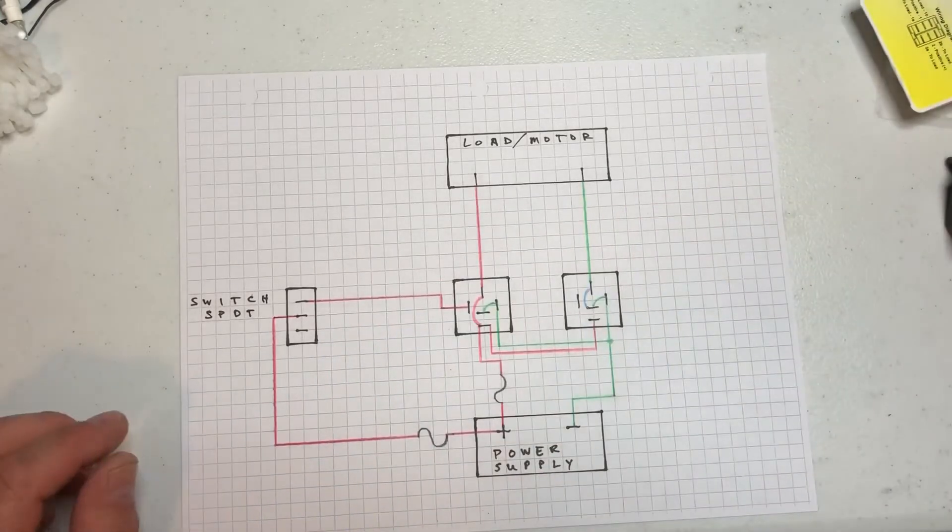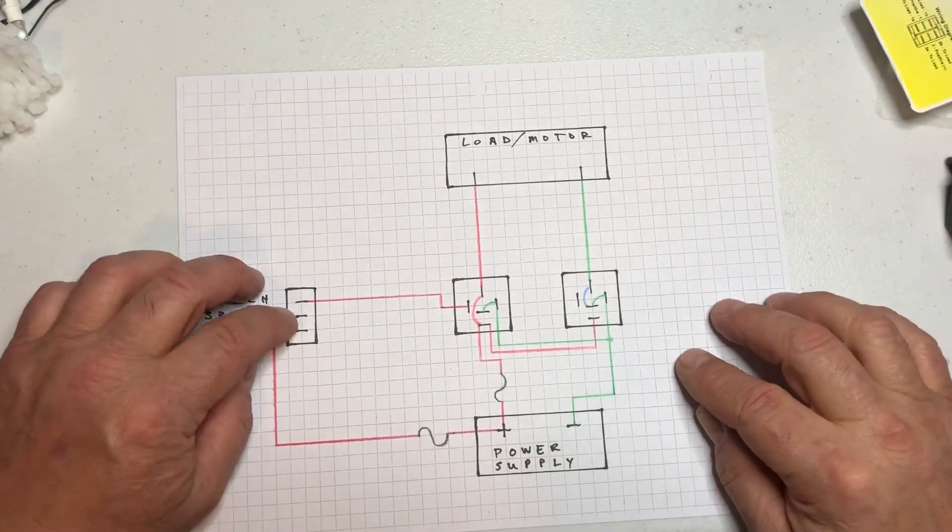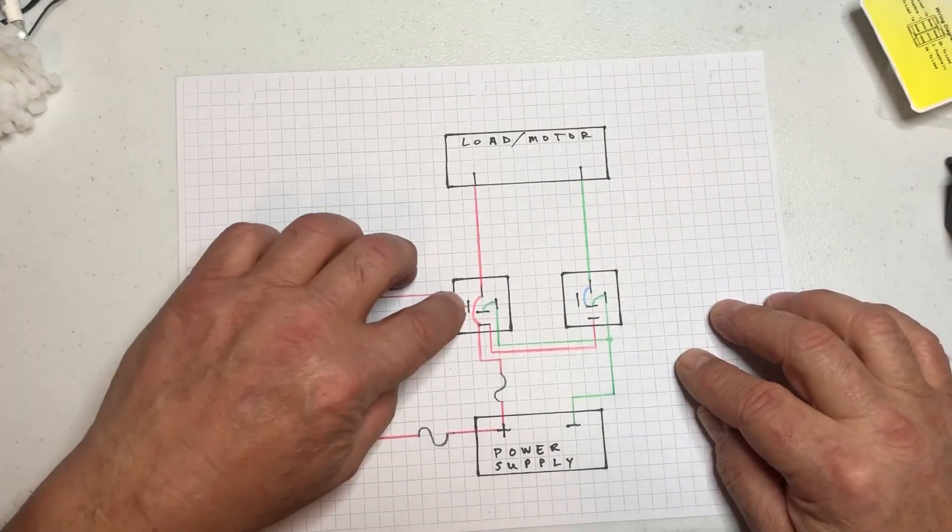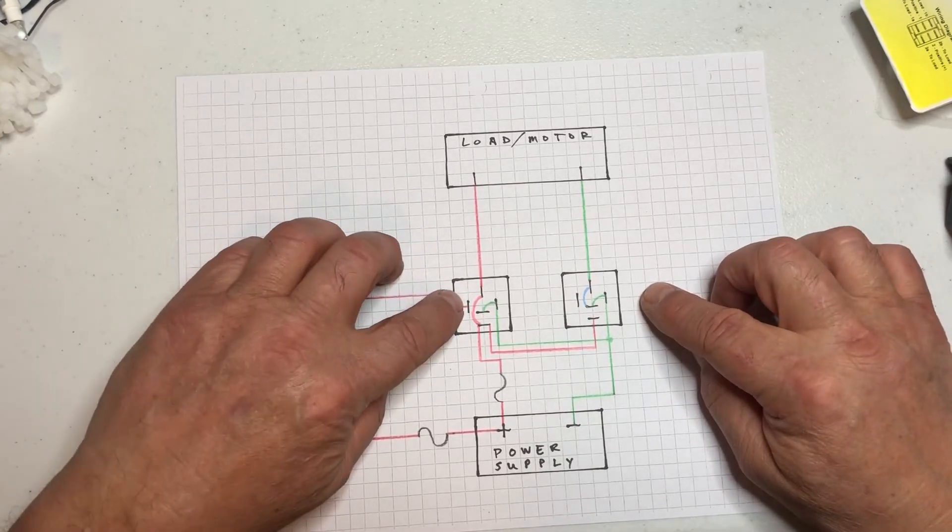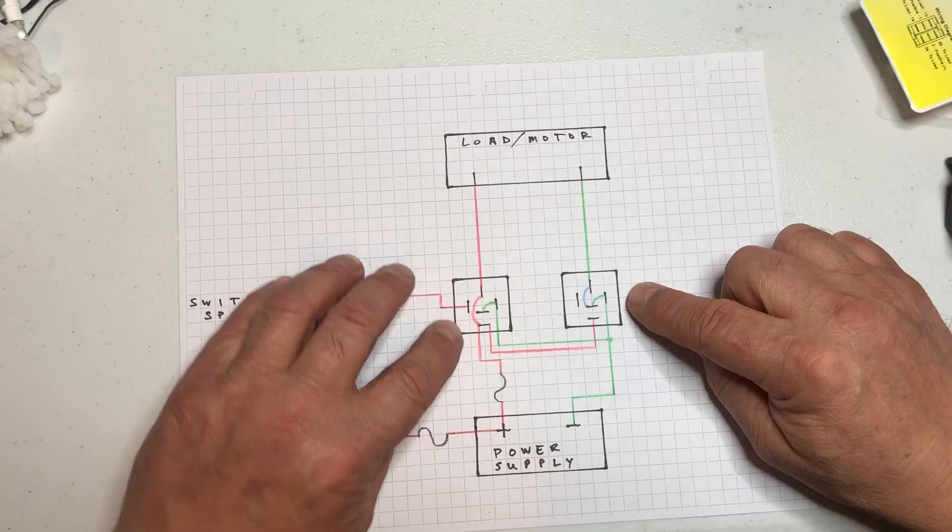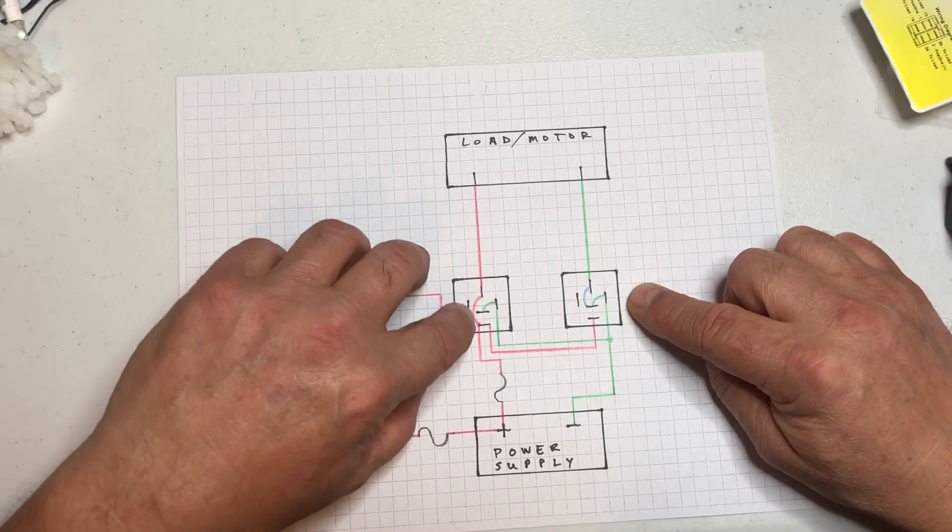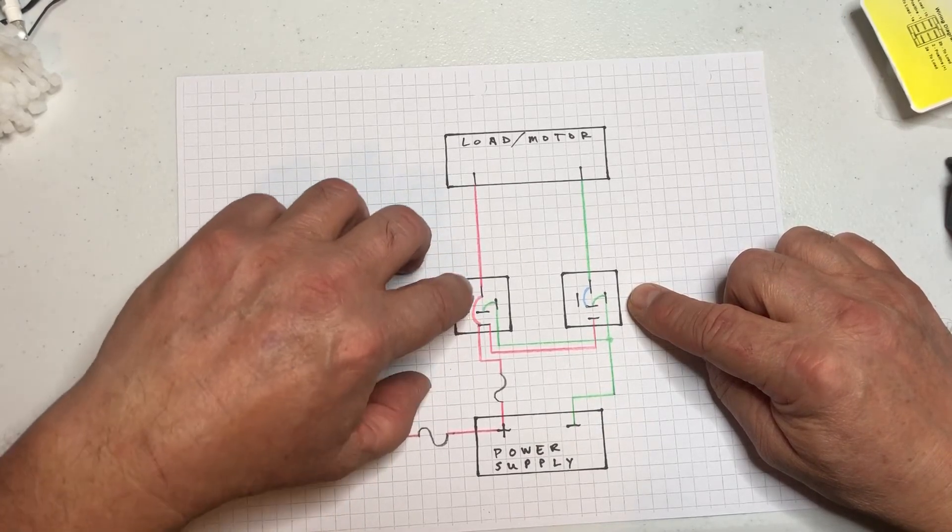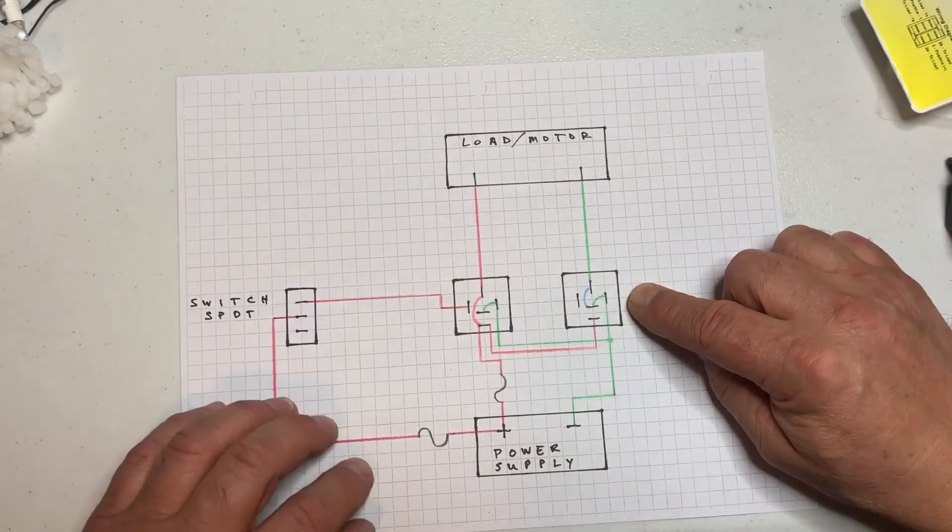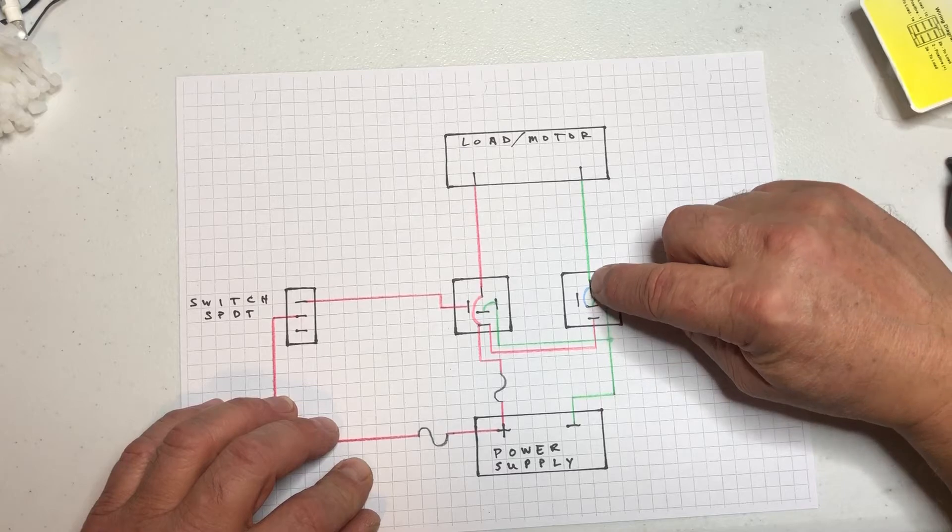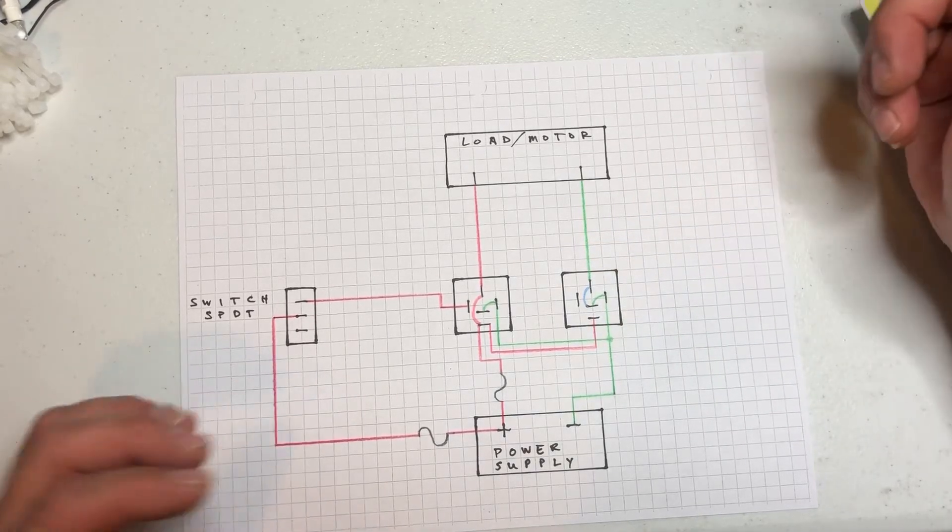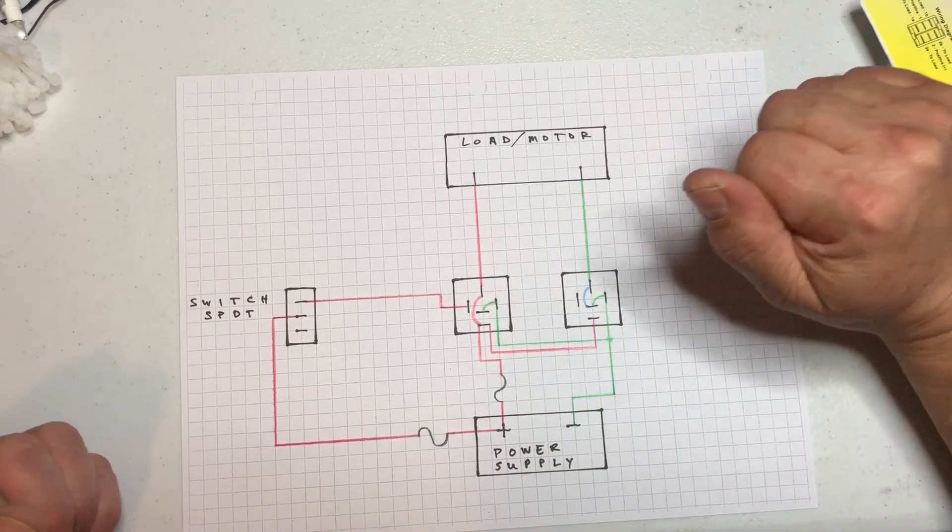Okay and then when you depress a switch you're gonna change the state of one of the relays depending on which way you press the switch. So it'll internally connect this contact and this contact making that positive. This one will stay the same so that contact and that contact will be negative, rotating the motor in a direction.